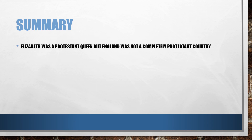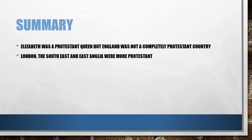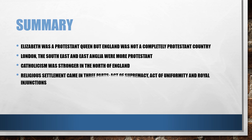In summary, Elizabeth was a Protestant queen but England was not completely a Protestant country due to the geographical divisions. London, the South East and East Anglia were more Protestant, with those in the north of England more likely to be supporters of Catholicism. The religious settlement came in three parts: the Act of Supremacy regarding swearing an oath to Queen Elizabeth, the Act of Uniformity regarding how the church and services looked, and the royal injunctions which were instructions on what was inside the church and how to conduct services.